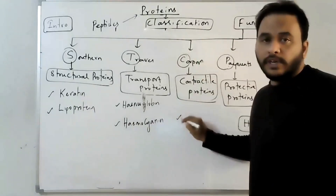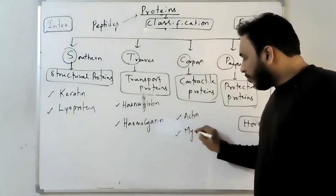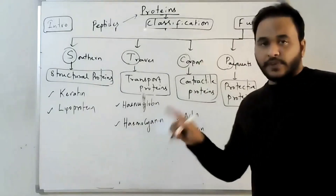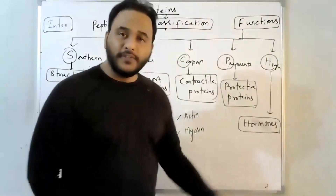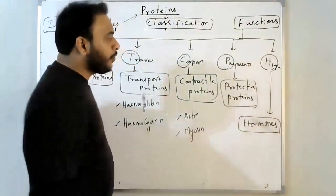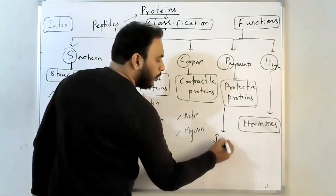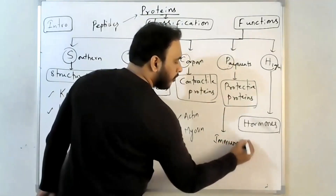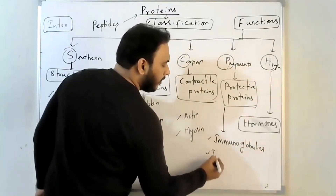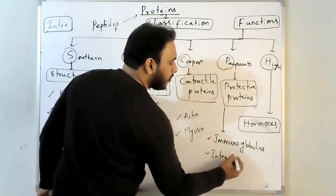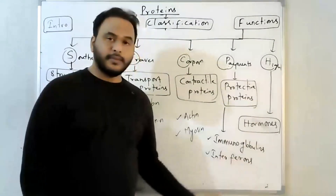Contractile proteins: actin and myosin — actin forms the thin filament and myosin forms the thick filament of the muscle. Protective proteins: immunoglobulins and interferons — these provide immunity to the body.